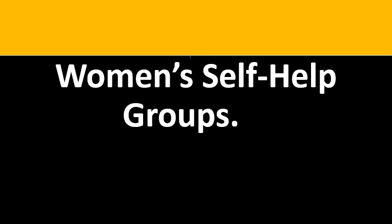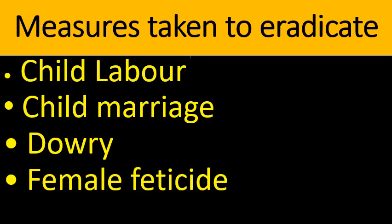Another important question in Super 30 is women's self-help groups and their programs. Measures taken to eradicate child labor, child marriage, dowry, and the reasons for female foeticide — measures taken to control all these social problems are to be learned.